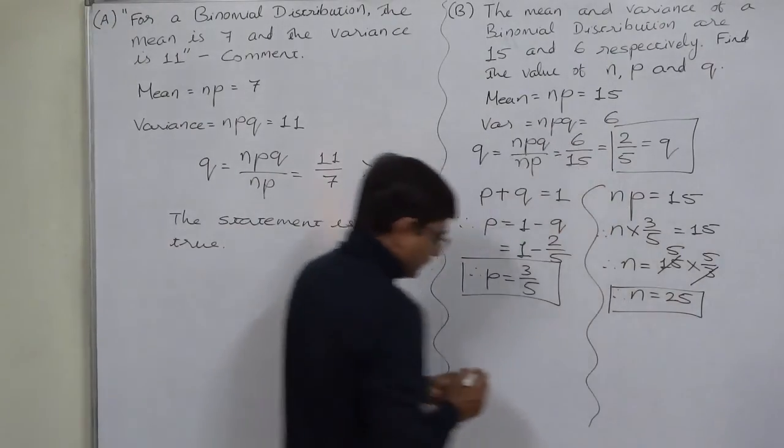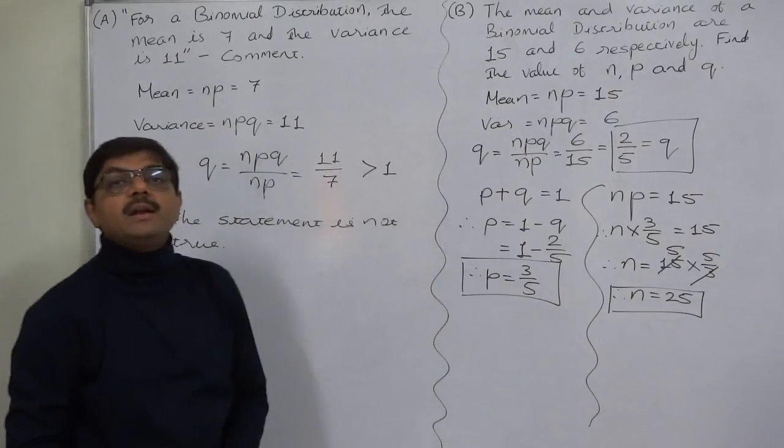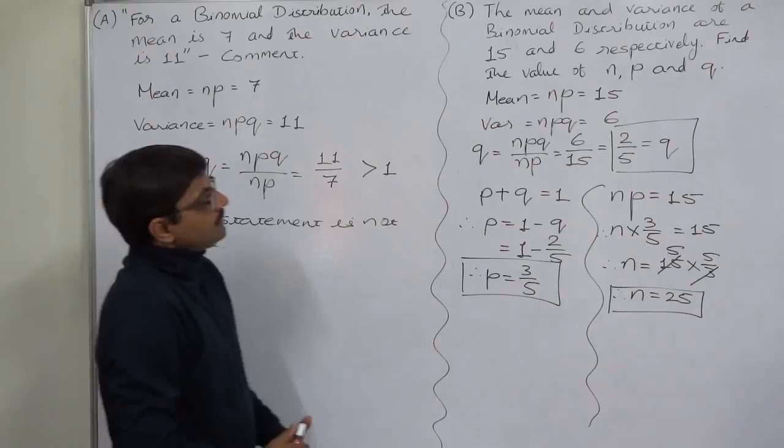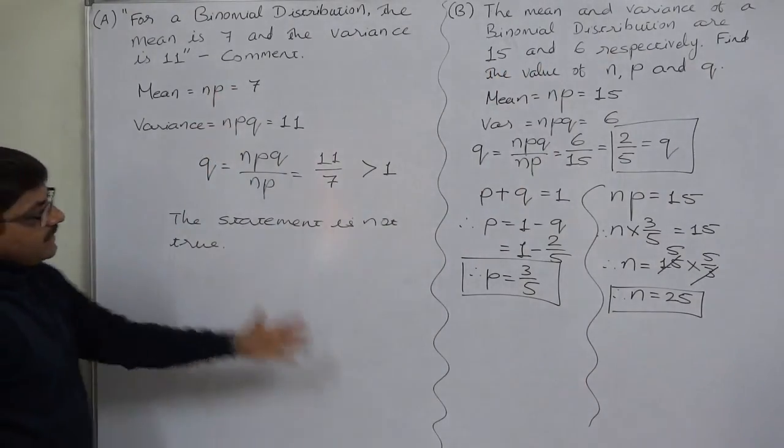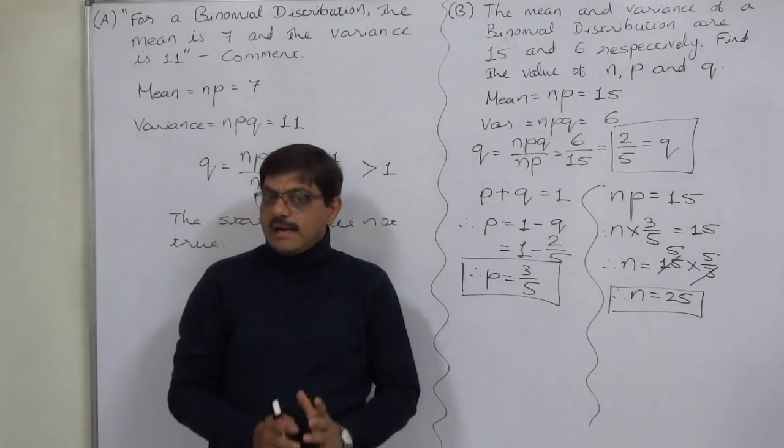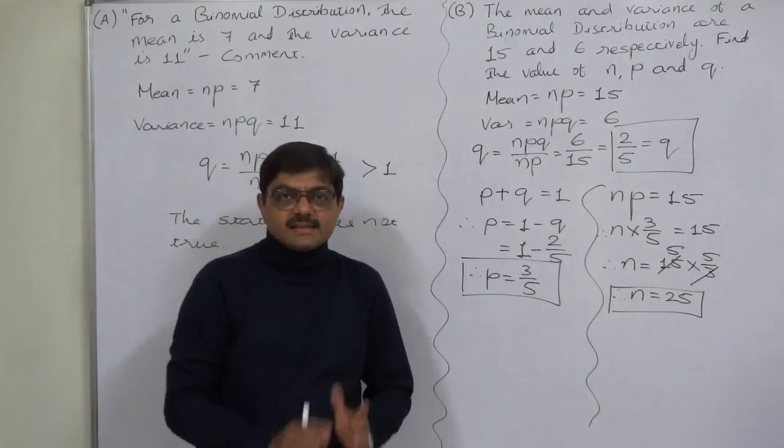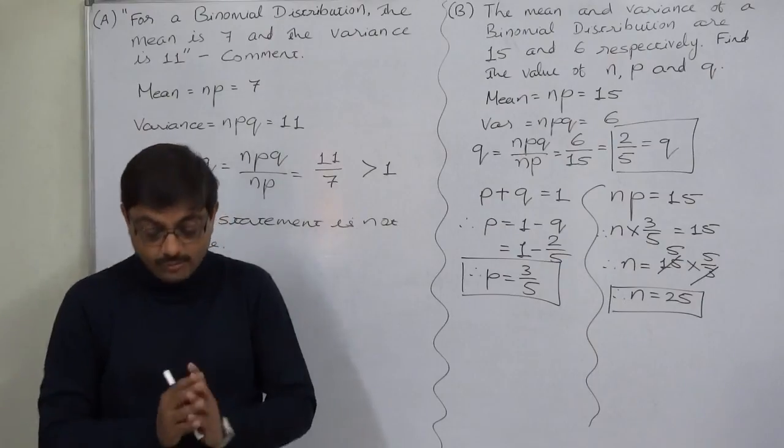So in this way we can use the information about mean and variance to find out the various parameters of the binomial distribution. I repeat, these two cases I suggest for the examinations covering MCQs. Thank you.